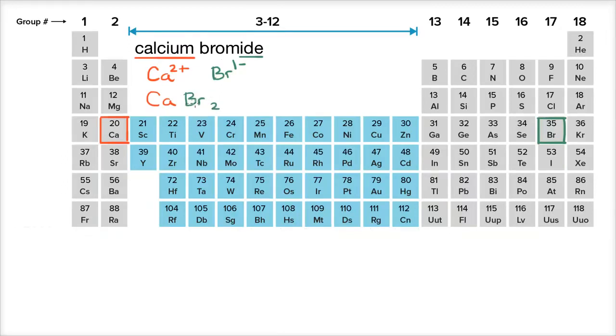And how did we know that we have two bromides for every calcium? Well, because when calcium ionizes, it's going to be two plus. It's a group two element right over here. And bromine only gets a negative one or one minus charge. So you're going to need two of the bromides for every one of the calciums.